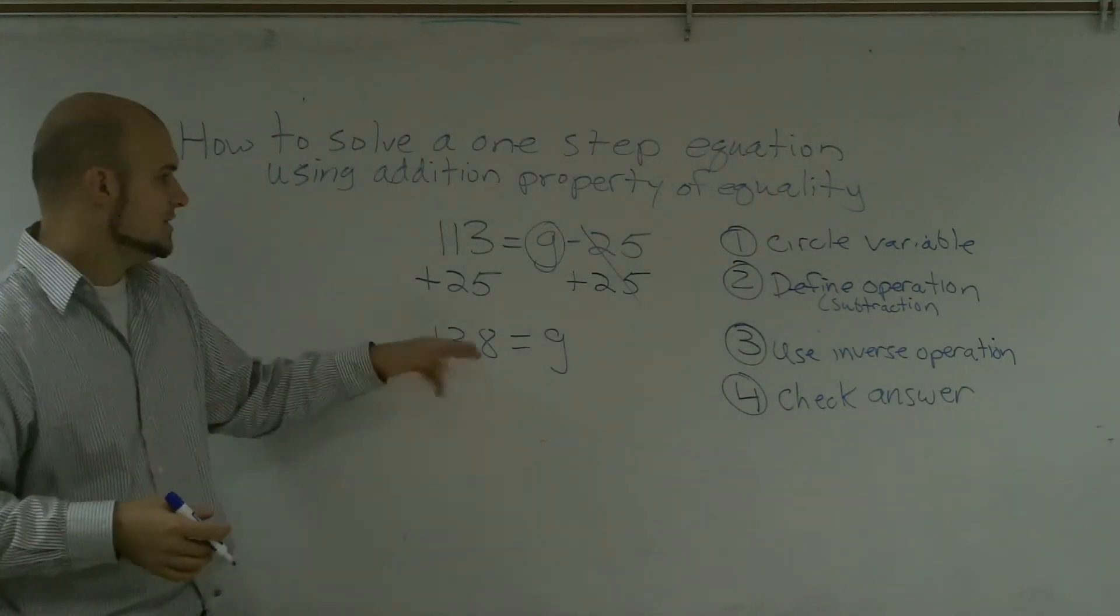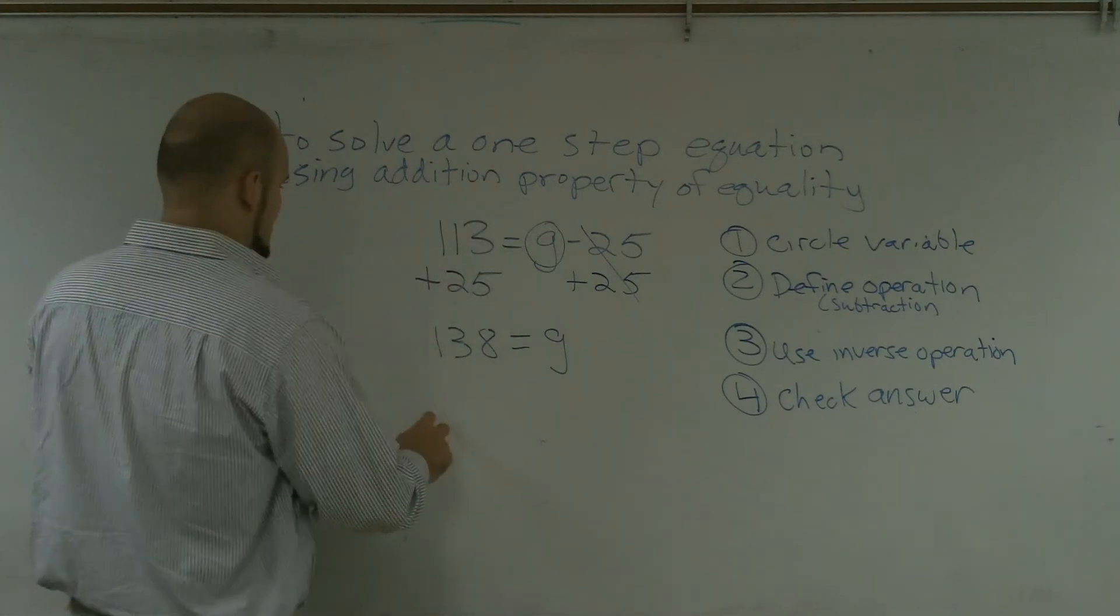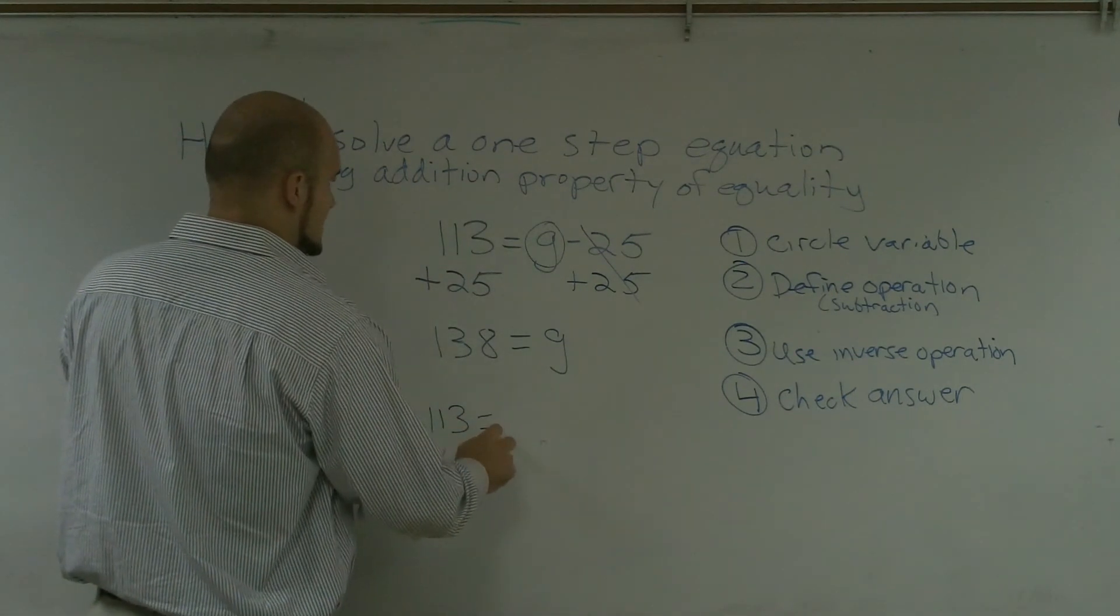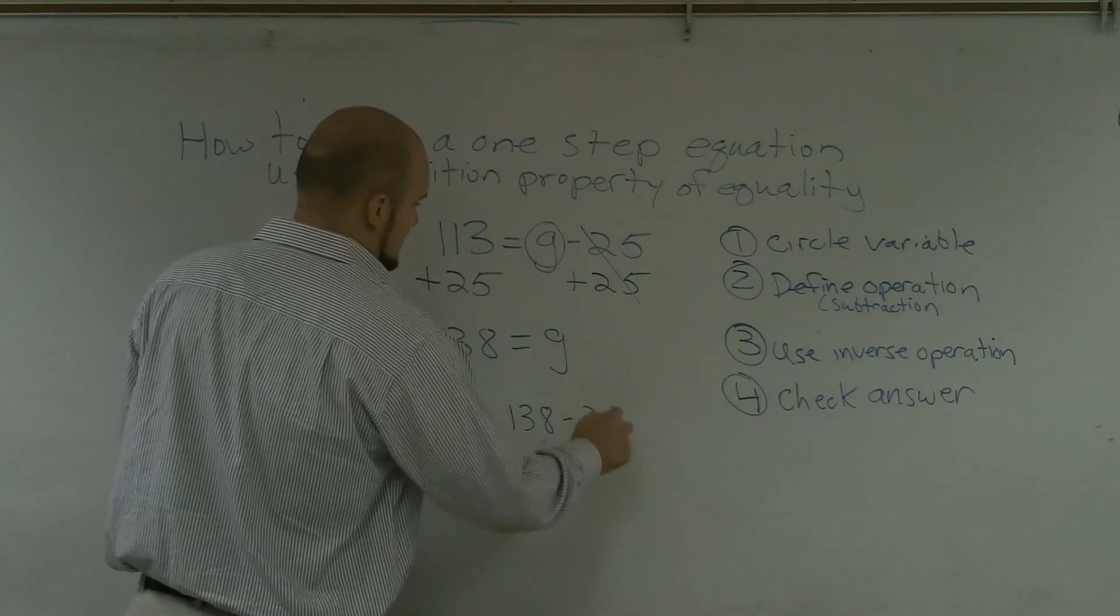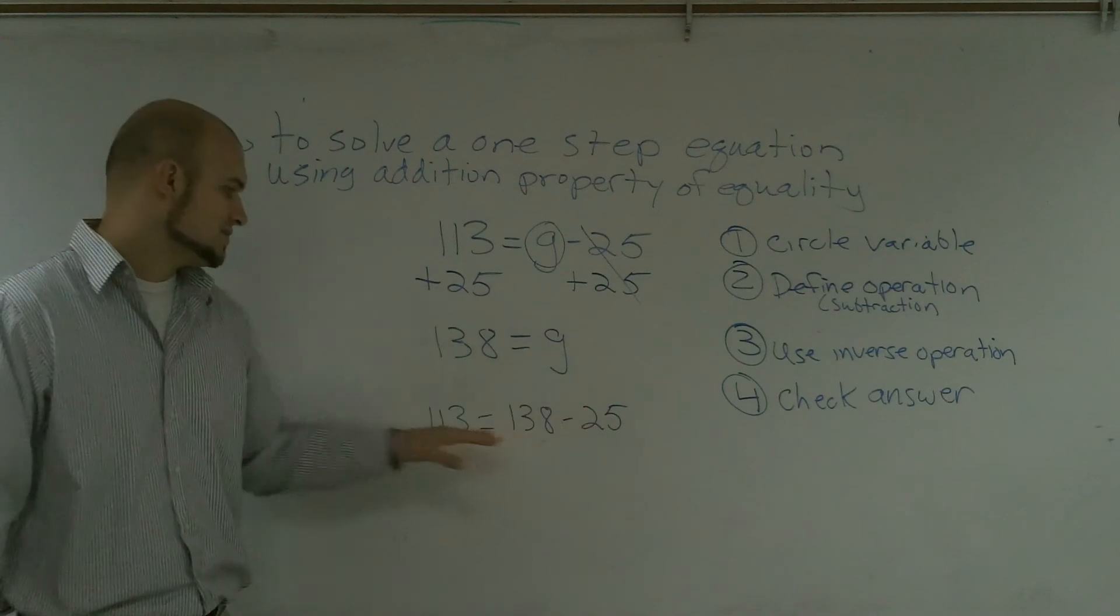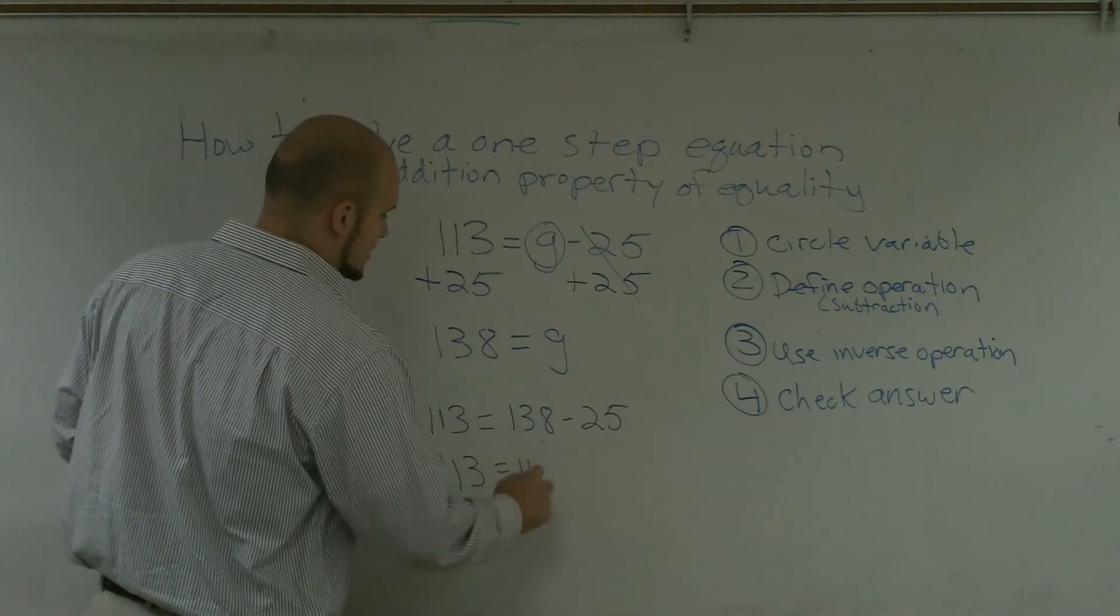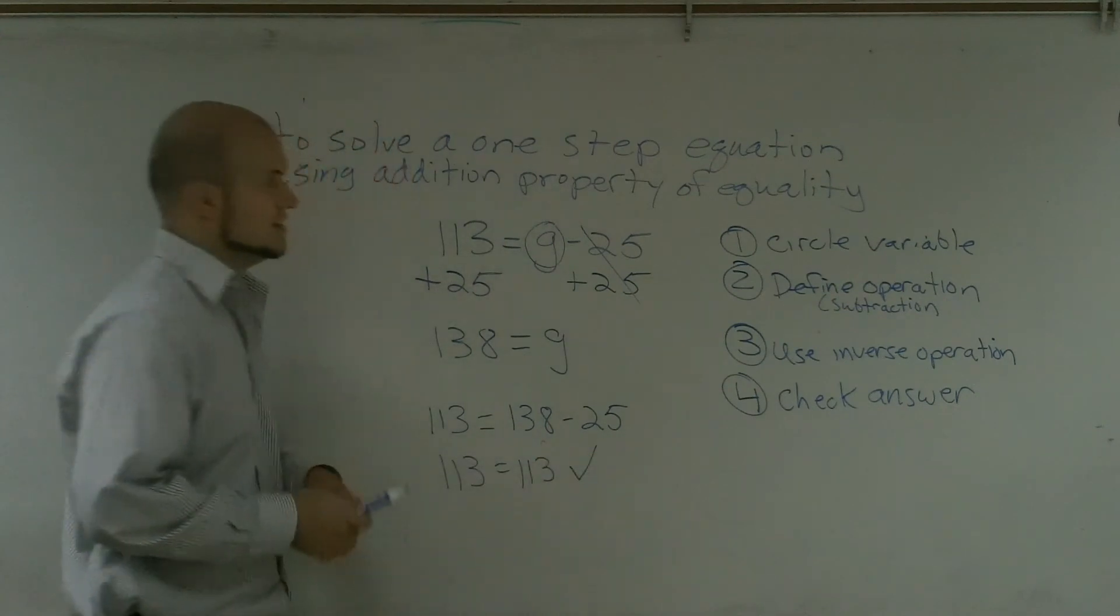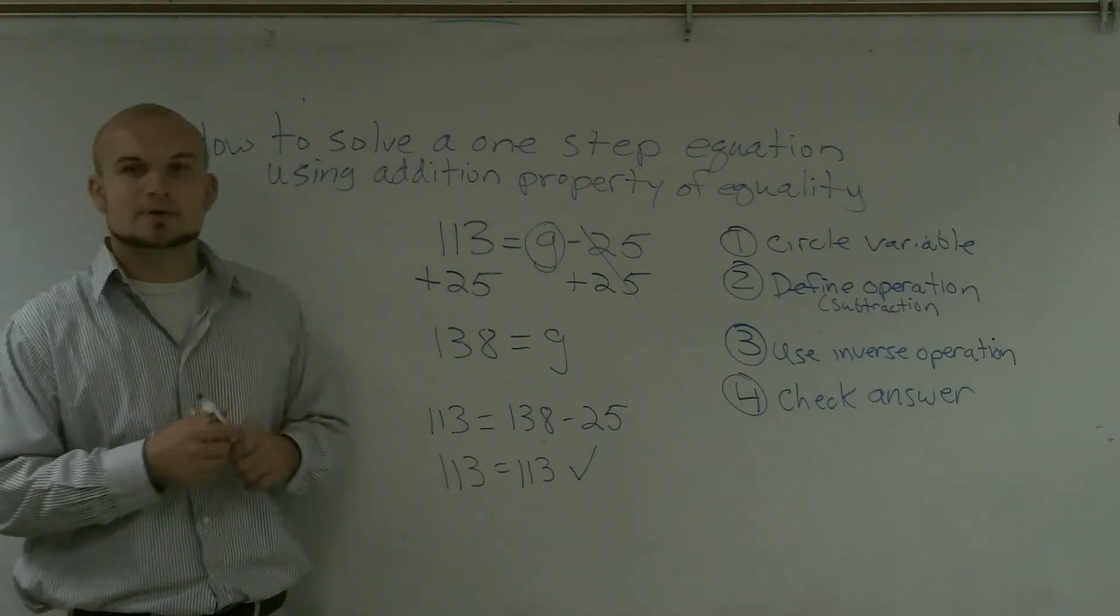So for step number four, I know that 138 equals g, so now I'm going to plug that back into my original equation. So I'm going to say 113 equals 138 minus 25. I go ahead and double-check. Is 138 minus 25, 113? Yes. So 113 equals 113. Let's check. So that is how you solve a one-step equation using the addition property of equality.